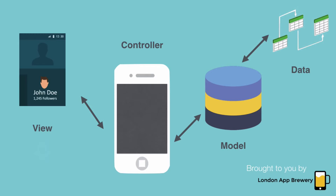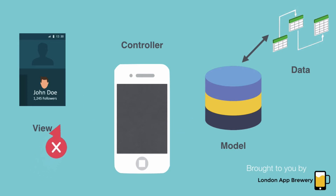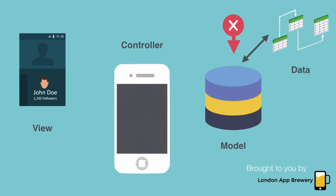Another reason people really like MVC is that it separates all the different functionality and components into individual packages of code. So if there's a problem — an error or a bug — it's much easier to identify by looking at whether it's in the view, the controller, or the model. This way of modularizing code makes it easier to maintain and helps when you're debugging.